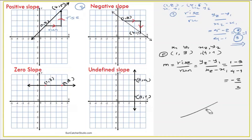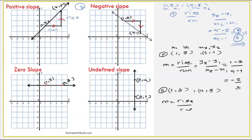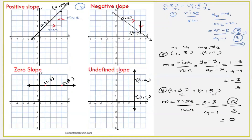We have zero slope. Points are (1, 3) and (4, 3). Using rise by run: m = (y2 - y1) / (x2 - x1) = (3 - 3) / (4 - 1) = 0 / 3 = 0. So the slope is 0. A zero slope is a horizontal line.